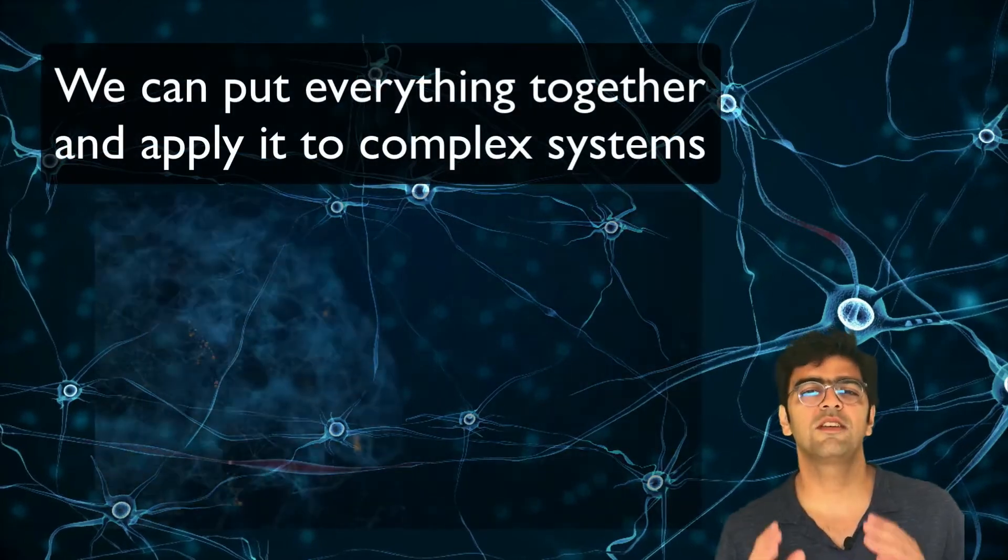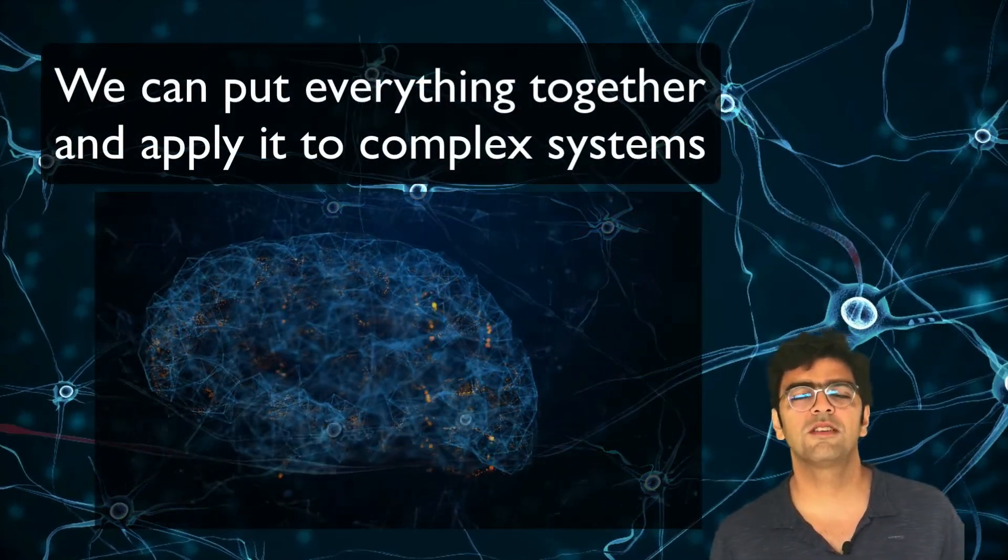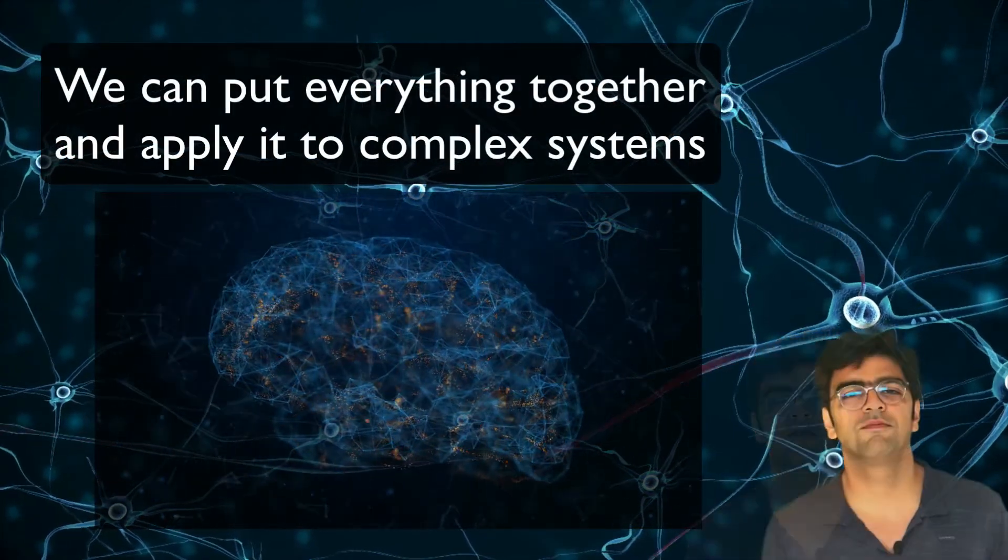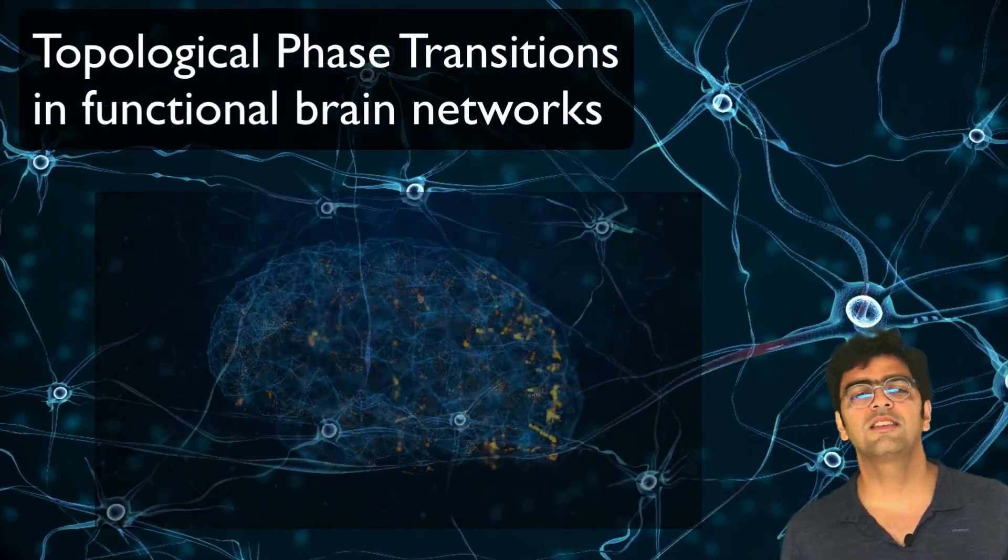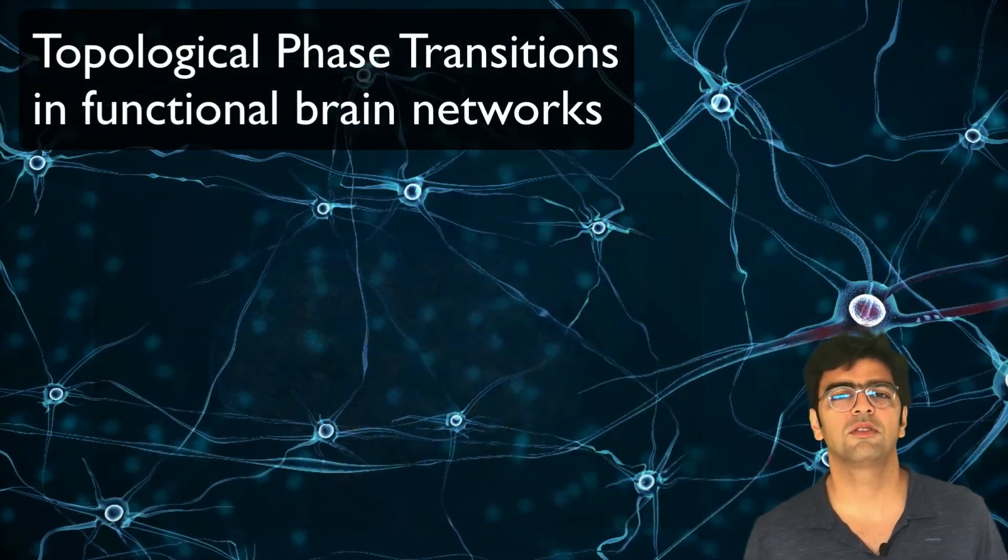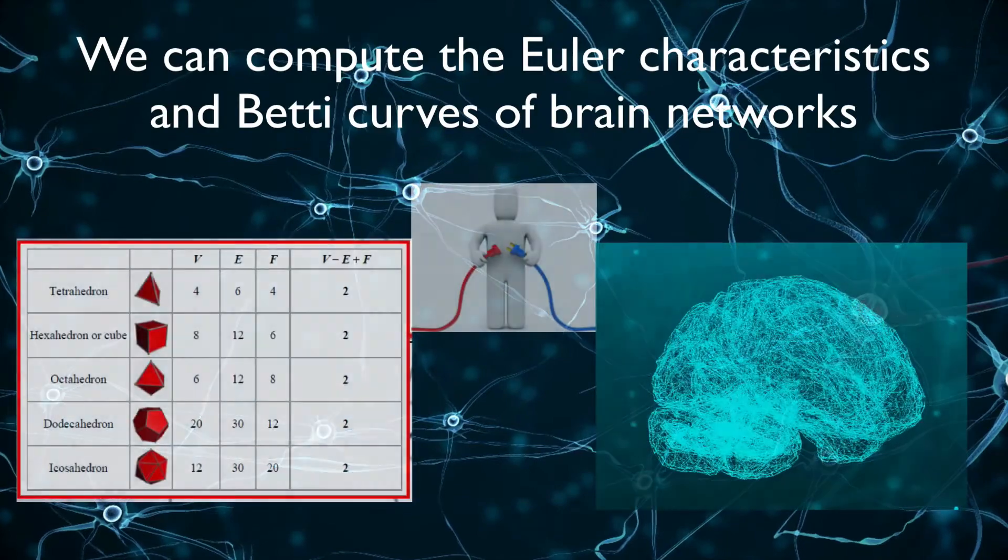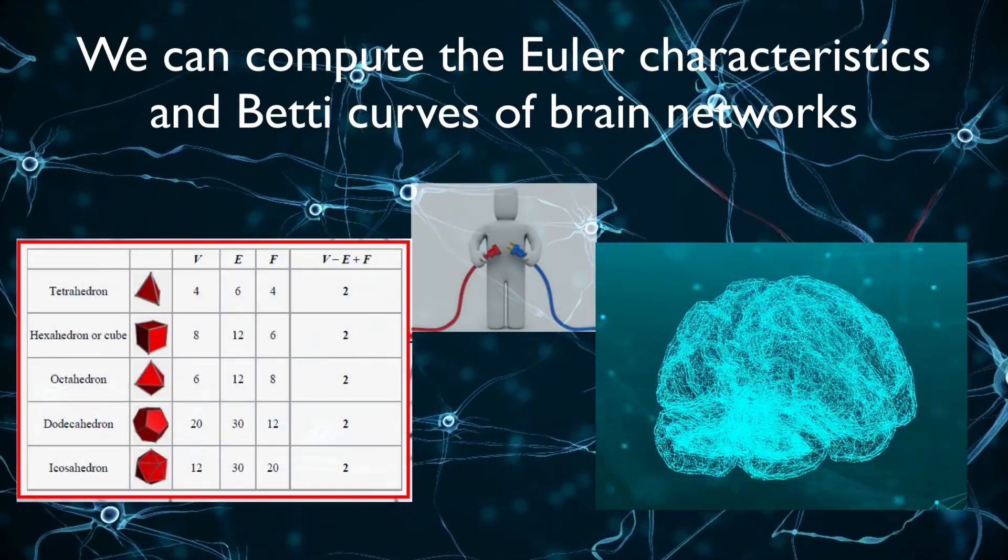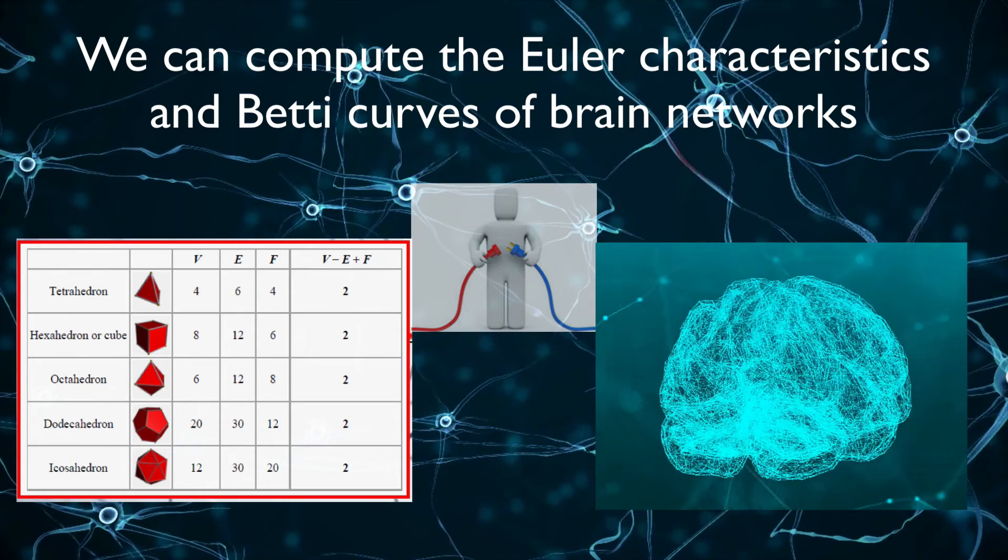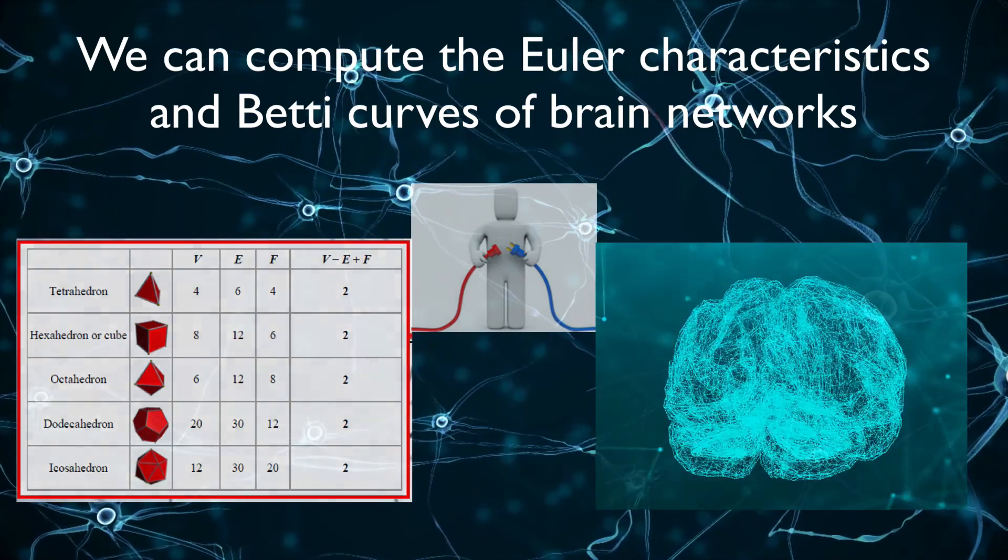We are now ready to investigate these topological phase transitions in complex systems. Let's start with functional brain networks. We can actually compute the Euler characteristic and the Betti curves of functional brain networks and associate it with topological phase transitions.